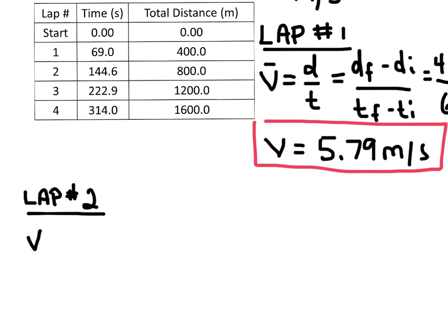Okay, so lap number 2, we have the same equation here. And when I'm looking at the second lap here, I'm going to start with this distance. The final distance here, if I'm using this equation over here, was 800 meters.